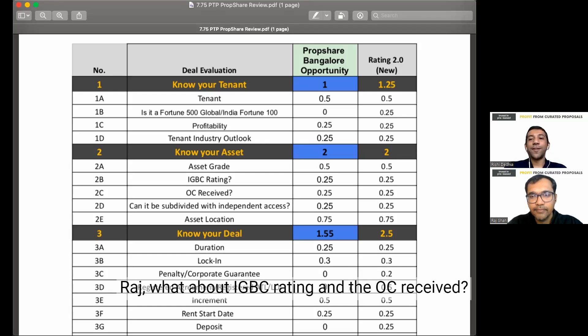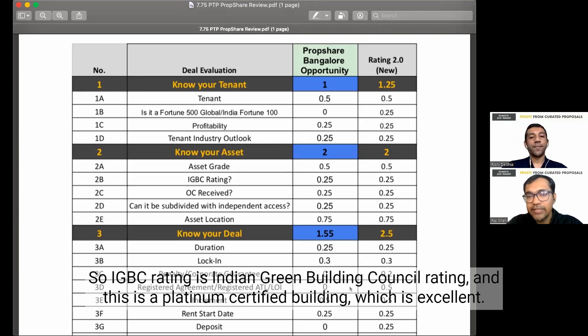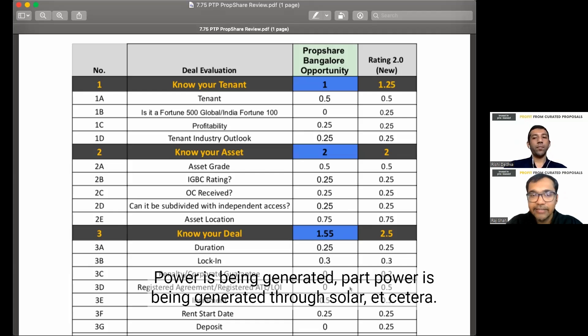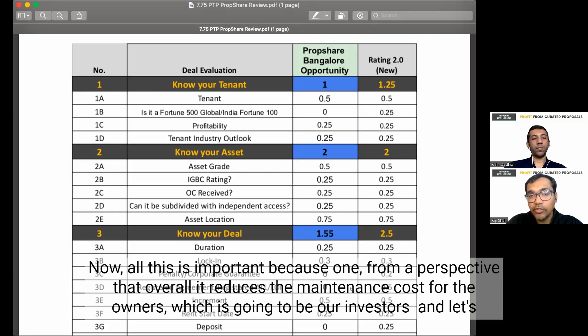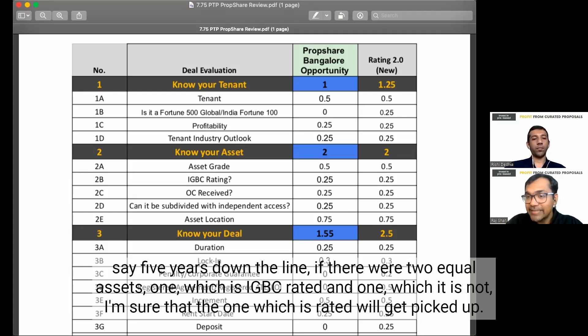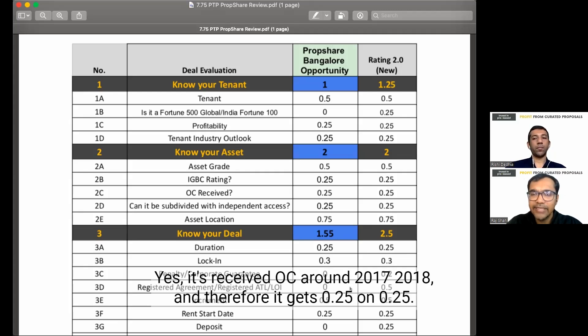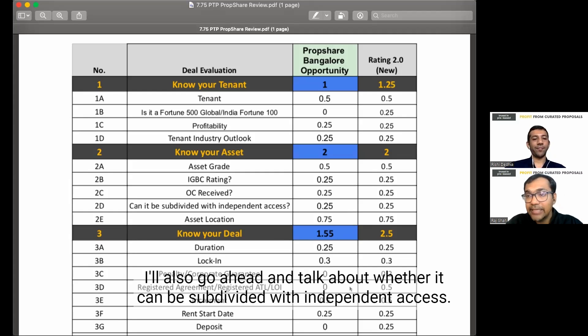What about IGBC rating and the OC received? So IGBC rating is Indian Green Building Council rating. This is a platinum certified building, which is excellent. Why this is important is because they use as little resources as possible in terms of water. They are recycling it. Power is being generated through solar, etc. Wastewater is being managed well. Now, all this is important because one, from a perspective that overall, it reduces the maintenance cost for the owners, which is going to be our investors. And let's say five years down the line, if there were two equal assets, one which is IGBC rated and one which is not, I'm sure that the one which is rated will get picked up or sold off fast. And therefore, we give it 0.25 on 0.25. In terms of occupation certificate received, yes, it's received OC around 2017, 2018. And therefore, it gets 0.25 on 0.25.